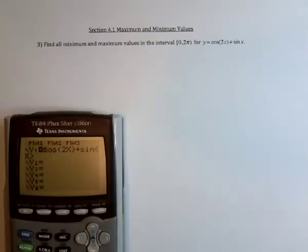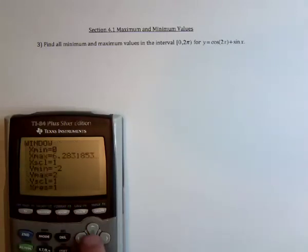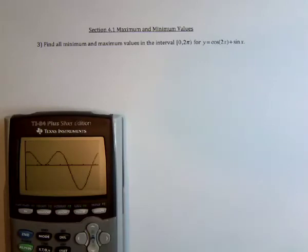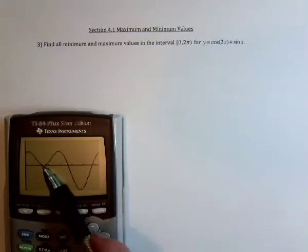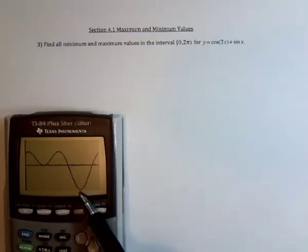So, the function is cosine of 2x plus sine of x, the window from 0 to 2π. Take a look at the graph, and it looks like there is a maximum, a minimum, a maximum, and a minimum.